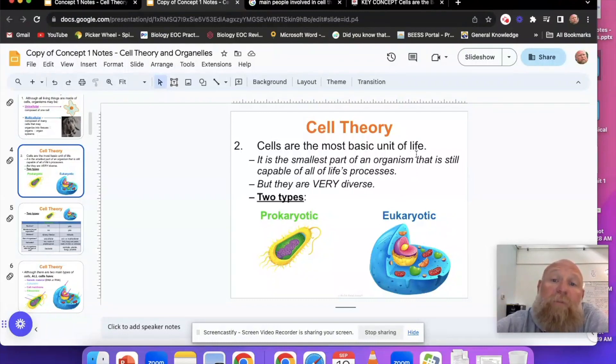Cells are the most basic unit of life, part two to this whole cell theory. It's the smallest part of an organism that's still capable of all of life's processes. This actually is DNA floating around, chromosomes inside of the cell itself, but no nucleus. Remember that prokaryotic cells do not have a nucleus, but they're still very diverse.